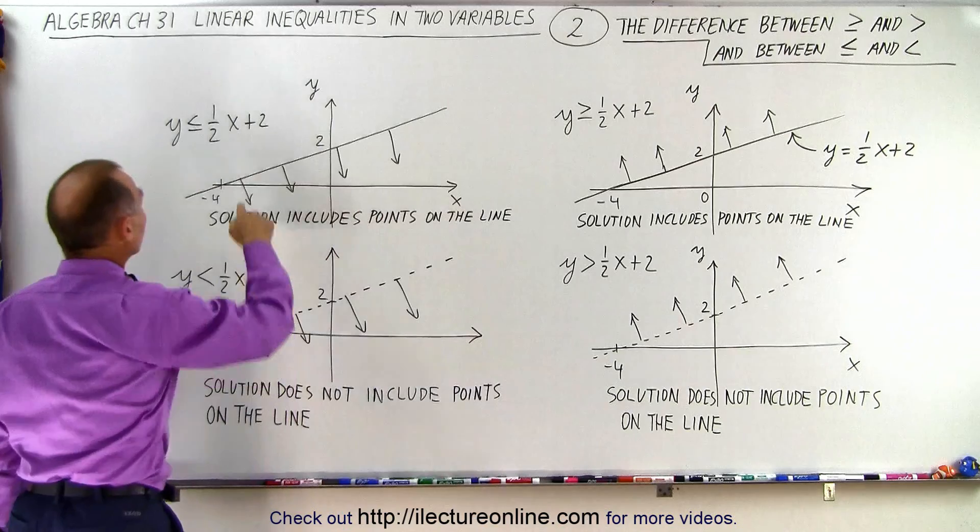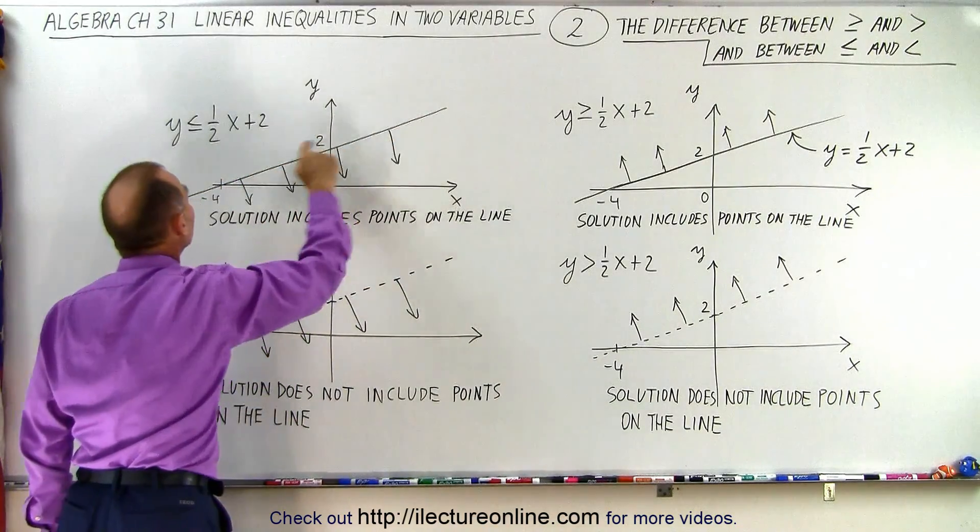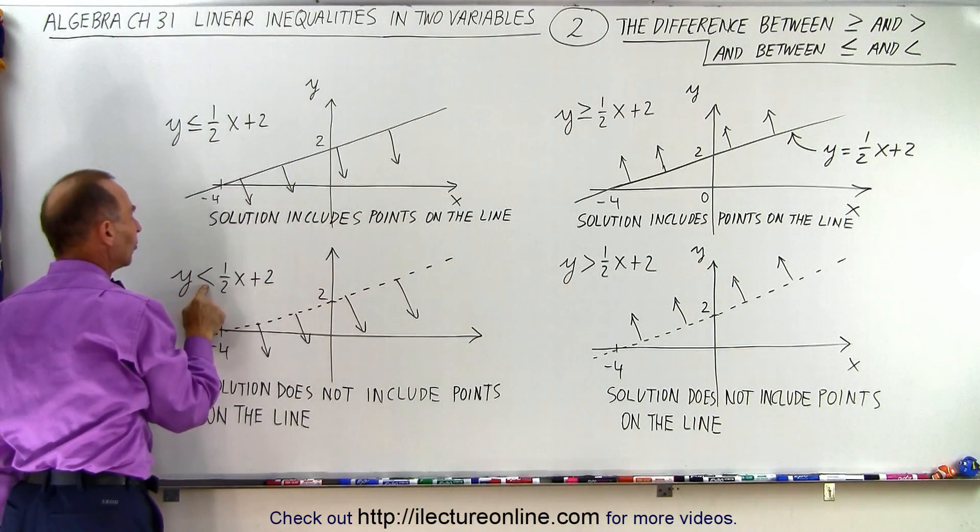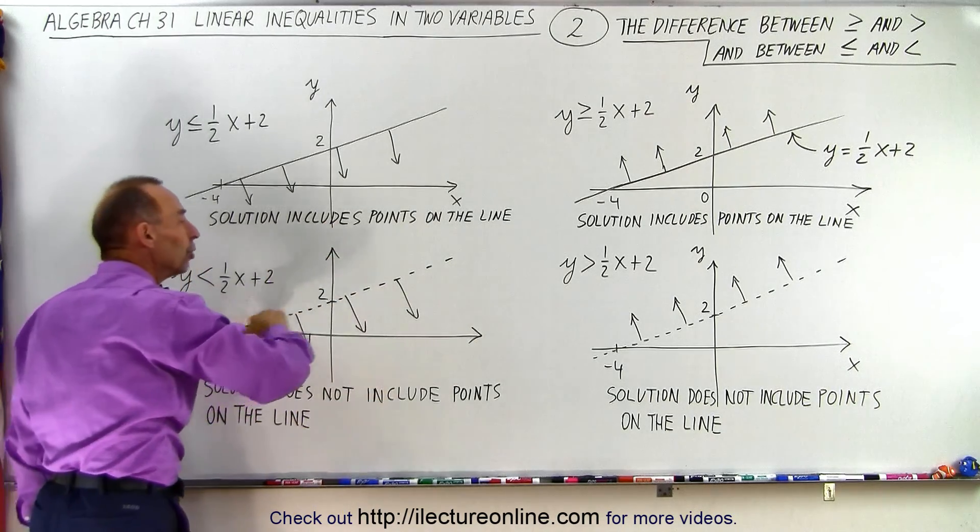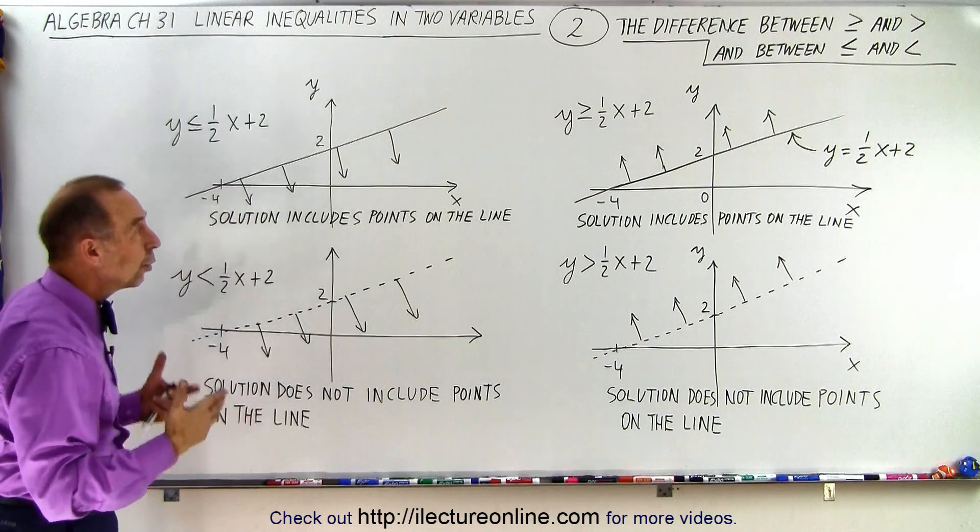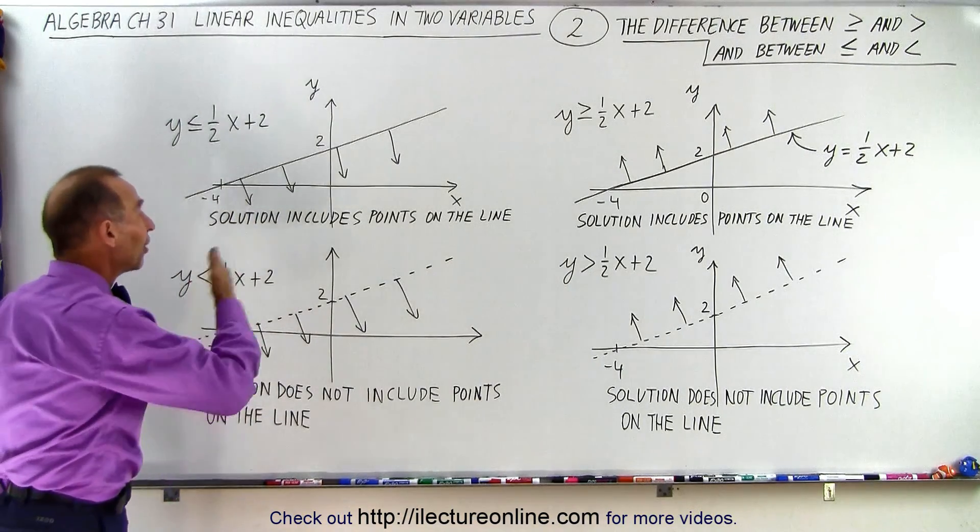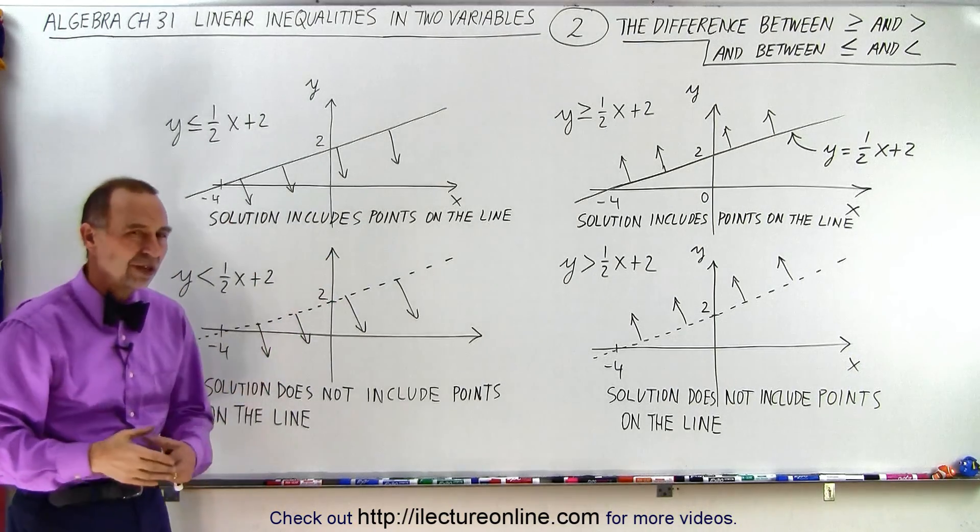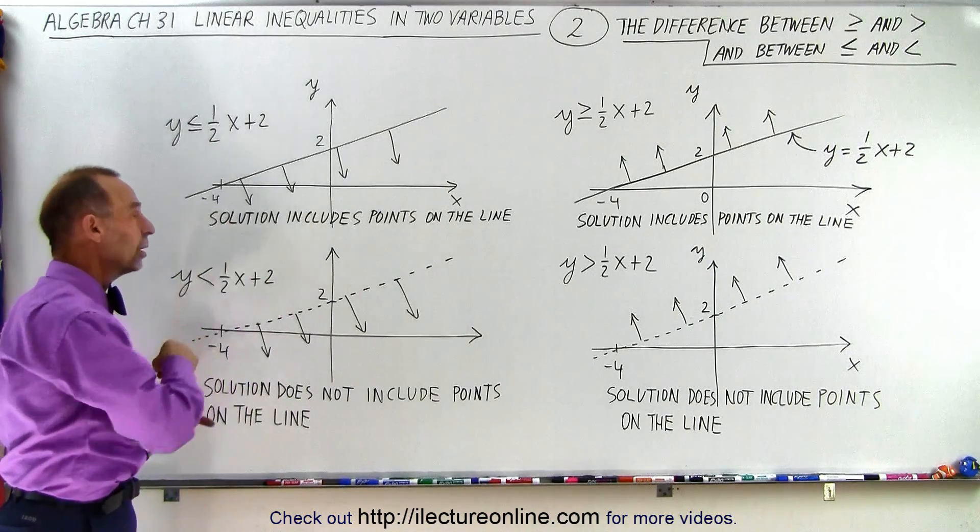Here, the solution set is all the points below the line, including all the points on the line, because we have the equal symbol. And here, since the equal symbol is missing, it's all the points below the line not including the points on the line. That's how we differentiate between valid regions and whether the points on the line are part of the solution. When we say part of the solution, we mean those points satisfy the inequality.